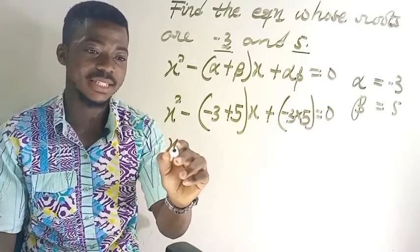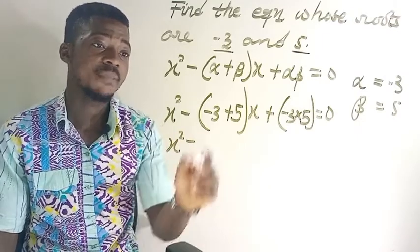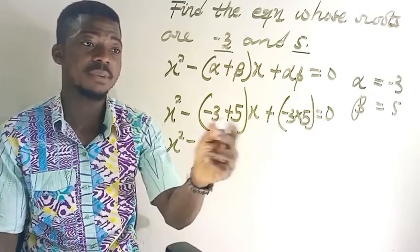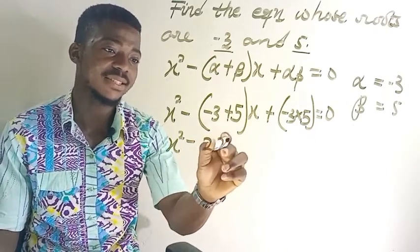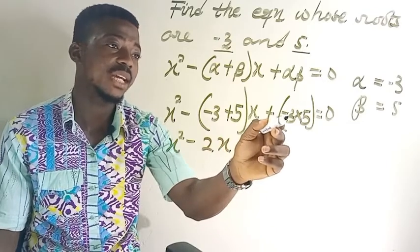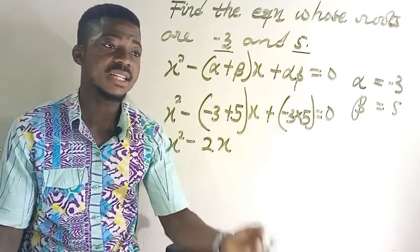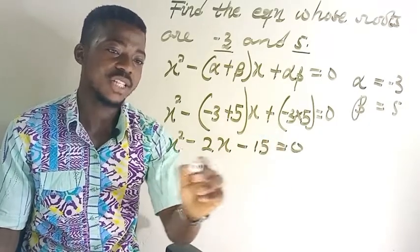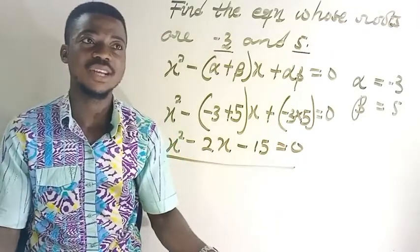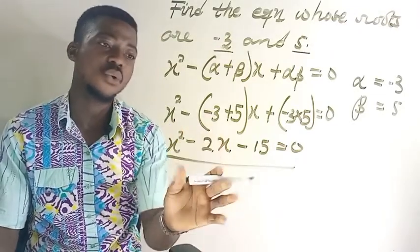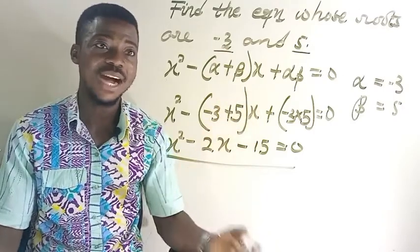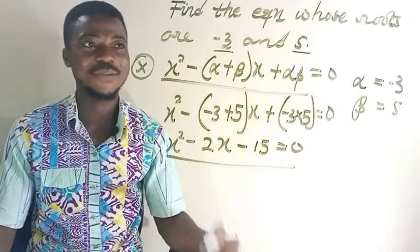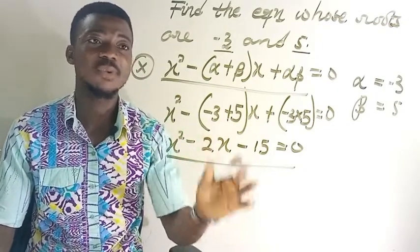Simplifying: −3 + 5 gives us 2, so we have x² − 2x. Then −3 times 5 gives us −15, so plus −15 equals 0, giving us x² − 2x − 15 = 0. This is our quadratic equation whose roots are -3 and 5.